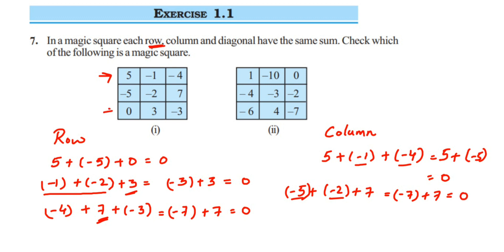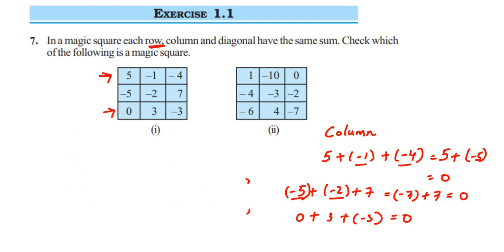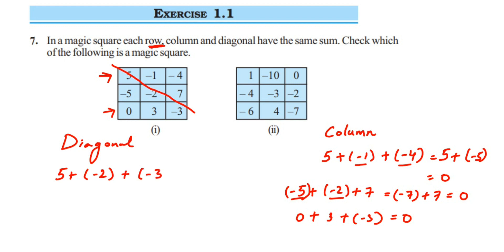The third column is 0 + 3 + (−3). Zero doesn't change anything, and 3 + (−3) = 0. So far all rows and columns give 0. Now let's check the diagonals. The first diagonal is 5 + (−2) + (−3). Adding −2 and −3 gives −5, and 5 + (−5) = 0.